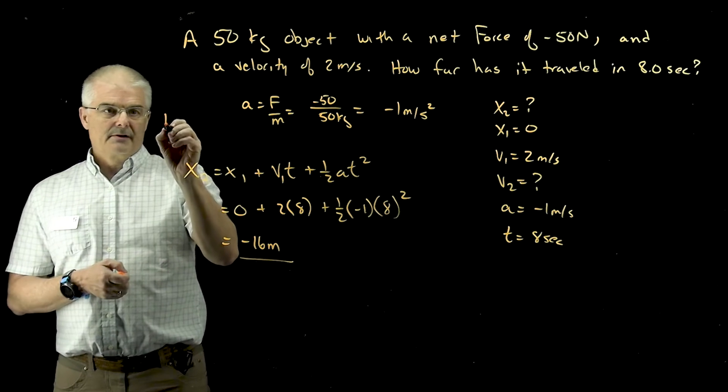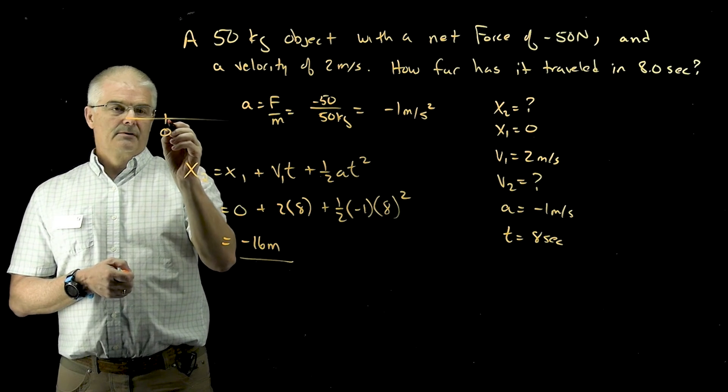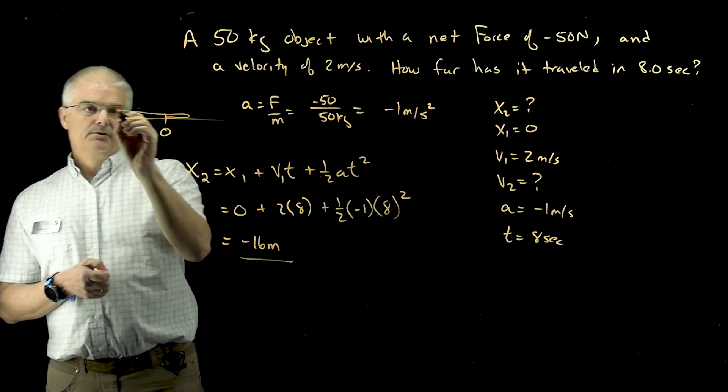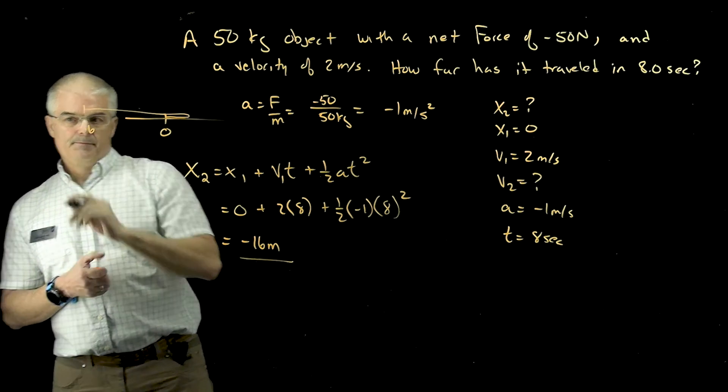So if it starts here at X equal to 0, it's a number line, 0, it's probably going to go here and boom, and it's going to end up at negative 16 over here.